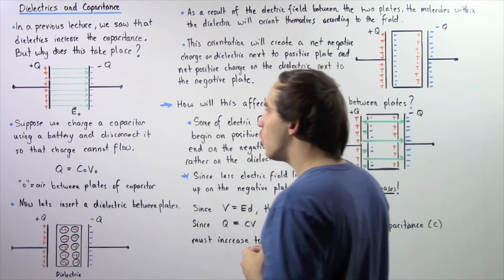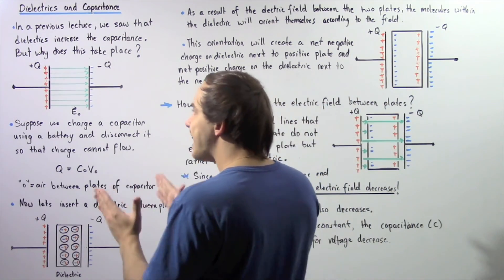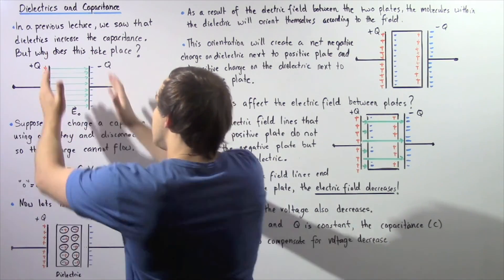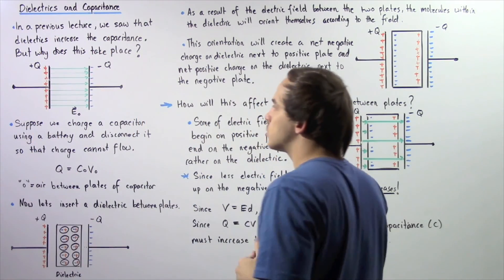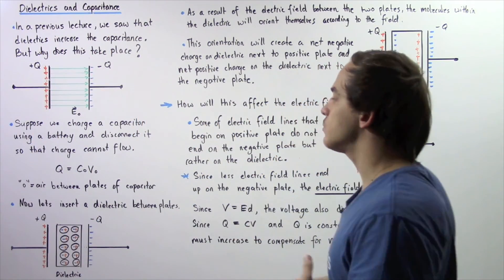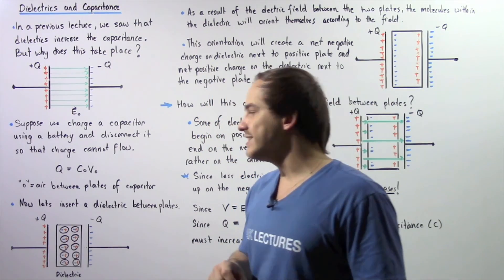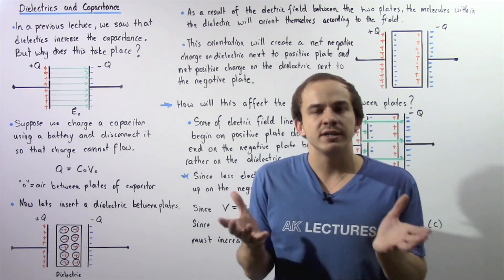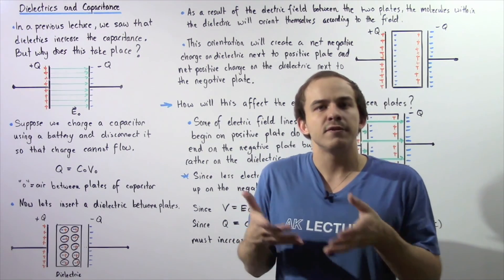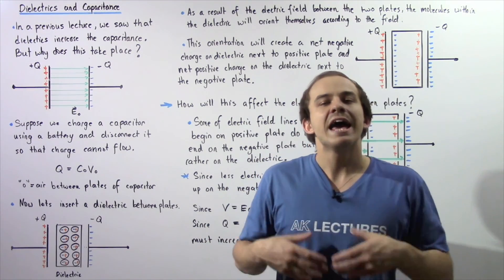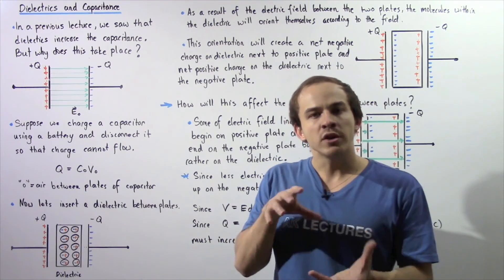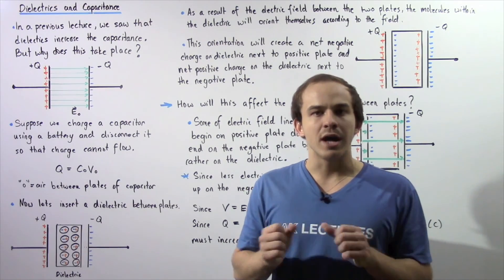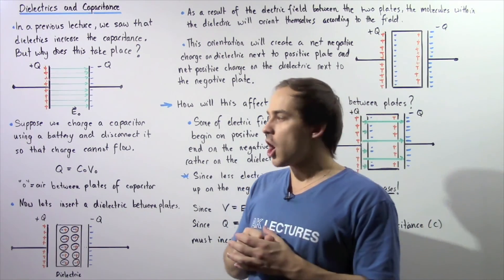Now suppose we take a dielectric and instead of having air, we place a dielectric between our two plates as shown in the following diagram. Our dielectric essentially consists of different atoms and molecules, and within these atoms we're going to have different densities of electrons, different densities of charge.